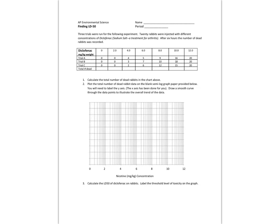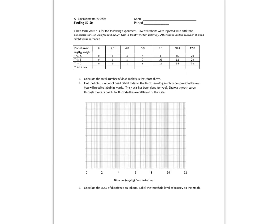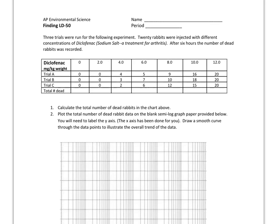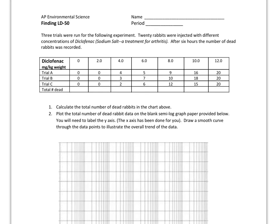I'm going to go over how to find lethal dose 50% dead when you're given a data set. You should have a paper that looks like this, so let's go ahead and read it. Three trials were run for the following experiment: 20 rabbits were injected with different concentrations of diclofenac, which is a sodium salt and a treatment for arthritis. After six hours, the number of dead rabbits was recorded — and yes, they do test on rabbits.